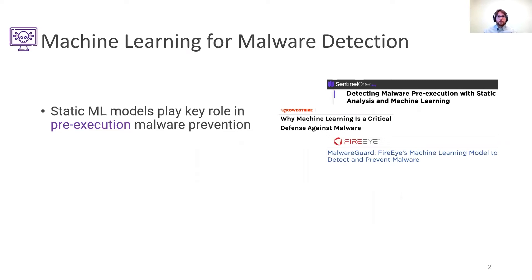Among the different typologies of models and systems designed for this purpose are those based on handcrafted static features. These systems look at the binary without executing it and extract relevant information or features that are used to distinguish potentially harmful files. This class of models is often deployed on endpoints and used for pre-execution prevention due to its ability to perform inference operations very quickly.